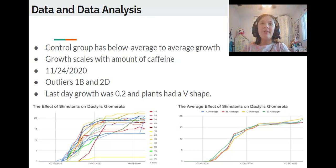On day 11-24-2020, the average height of A plants was 16.6 centimeters, equal to that of C plants, and 0.6 centimeters greater than B and D plants. On the last day, 12-1-2020, A plants had an average height of 17 centimeters.